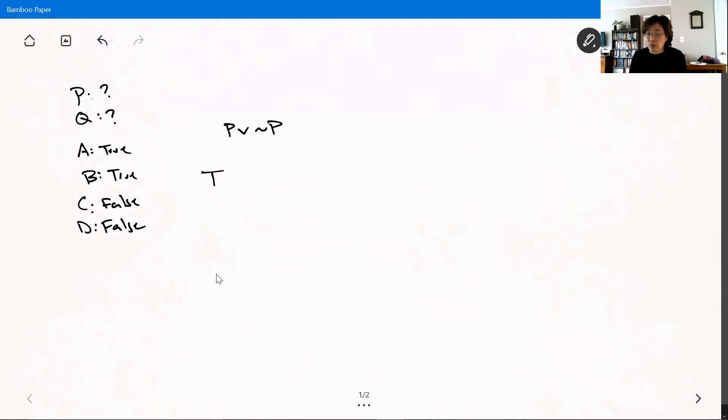P is either true or false. Now, we don't know which one. If P is true, then we know that the whole sentence is true. After all, disjunctions are true whenever either of the disjuncts is true, and here the left disjunct is true.